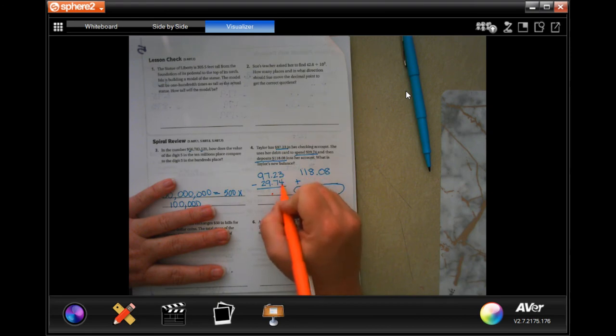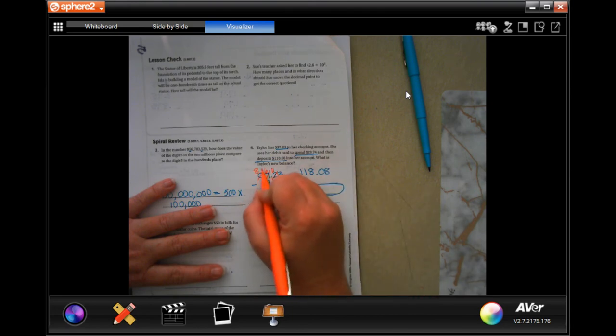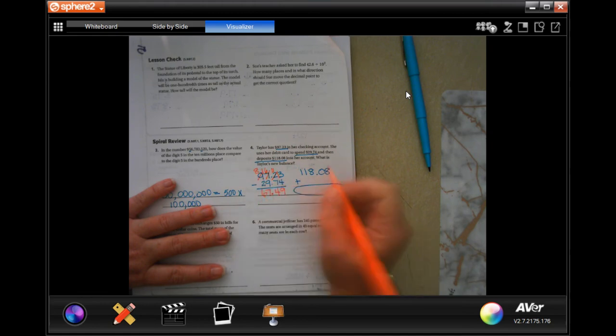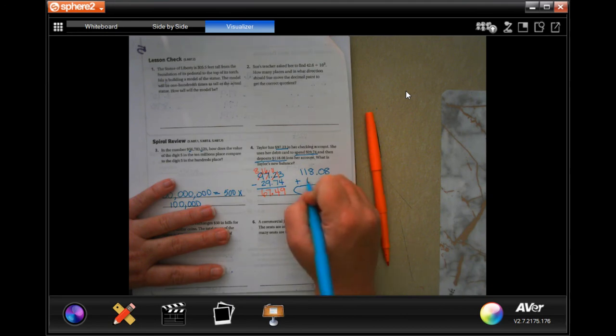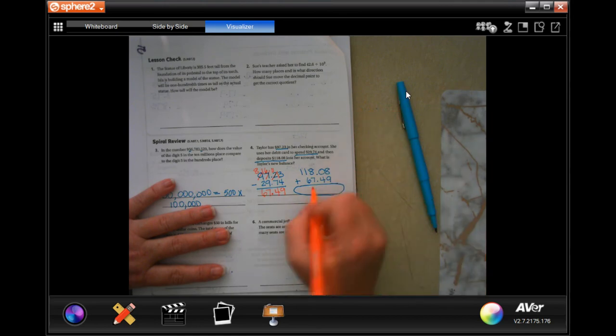Then, three cannot take away four. I need to borrow one, making it 13. 13 take away four is nine. One cannot take away seven. I need to borrow one, making that 11. 11 take away seven is four. Six cannot take away nine. I'm going to borrow one, making it 16. 15 take away nine is seven. Eight minus two is six. So, right here, I'm going to put six, seven, point, four, nine.